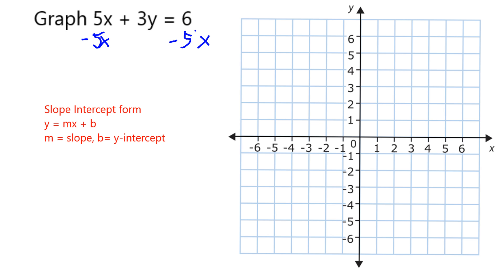Working to get the 3y by itself, I'm going to subtract 5x from both sides, which results in 3y equals negative 5x plus 6. Note that I put the negative 5x first because that's how it appears in the generalized slope-intercept form. And because this is negative and this is positive by default, it's like I'm adding 6 at the end.